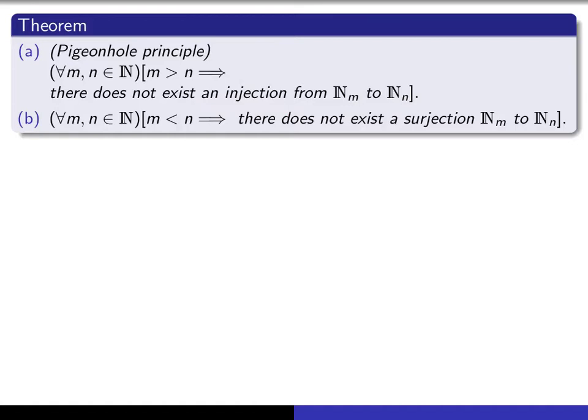If you try to map N sub m into N sub n, at least two of the natural numbers would have to go to the same element of this set. So it's sort of like you've got these, you have n pigeonholes, but you have m pigeons, and m pigeons are going to go into these pigeonholes, and if there are more pigeons than pigeonholes, then at least two of them have to wind up in the same pigeonhole.